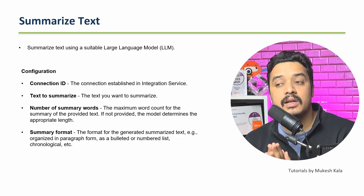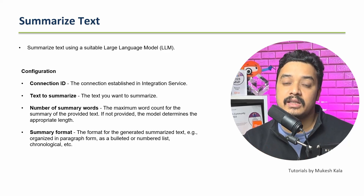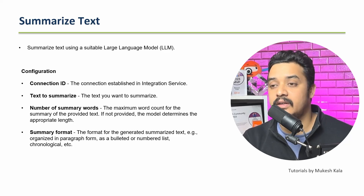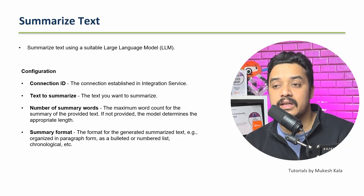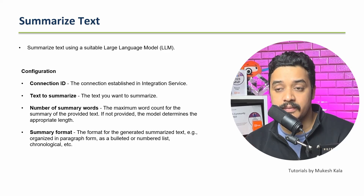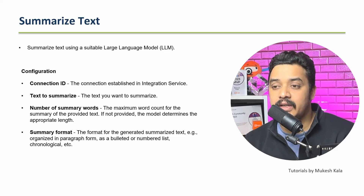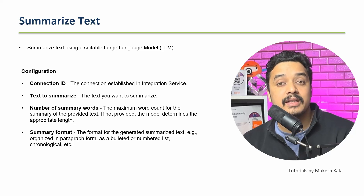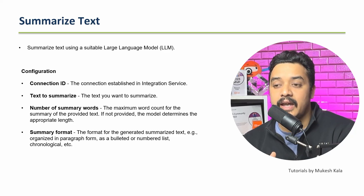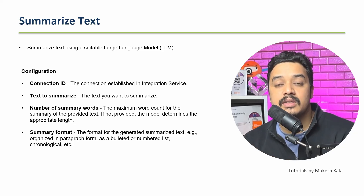The connection ID is the same one we set up in the last session using Integration Services. The second input to the activity is something called 'Text to Summarize' — that is, what text you want to summarize. Then you specify how many words you want in the summary: 10 words, 100 words, 150 words, and so on.